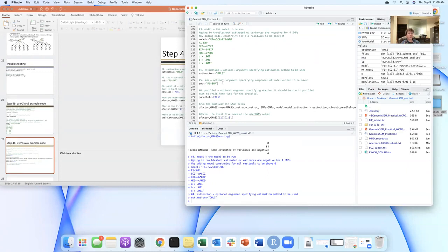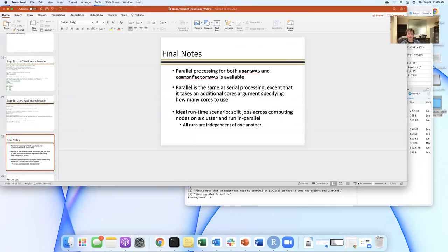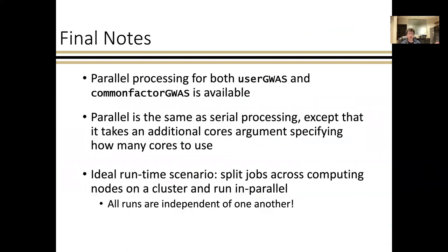And while that's running, I want to make some final notes that parallel processing is available for both user GWAS and common factor GWAS. Parallel is executing the exact same code as serial processing, except that it takes advantage of additional cores. In an ideal runtime scenario, you would split your jobs across computing nodes on a cluster and run in parallel. There is also MPI functionality available. So again, all runs are completely independent of one another. I've listed a number of resources here, including the GitHub, and I'm not going to go through this, but I've included some slides about some things to keep in mind.